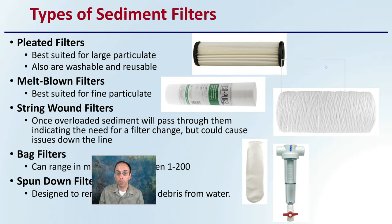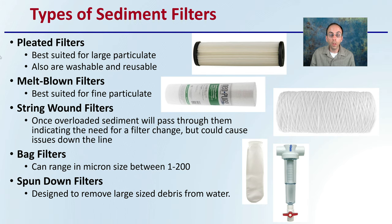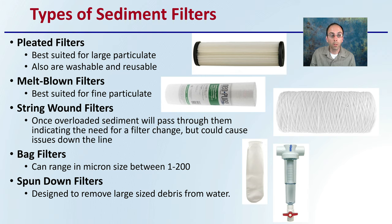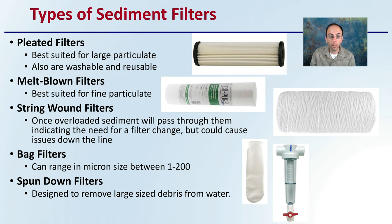What are the different types of sediment filters? Pleated filters are best suited for large particulate and are washable and reusable. Meltblown filters are best suited for fine particulates. String-wound filters, once overloaded with sediment, will pass particulate through, indicating the need for a filter change — but this could cause issues downstream, as it will suddenly let particulates by when full. Bag filters change in micron size between 1 and 200 microns. Spun-down filters are designed to remove large-sized debris from the water. Depending on what you're trying to remove will determine which type is the best option.